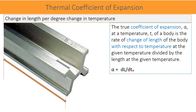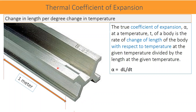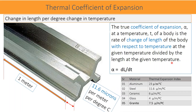For example, a one-meter steel bar measured at 21 degrees expands 11.6 micrometers in length. Aluminum expands 23 microns per meter per degree centigrade; steel expands 11.6 microns per meter per degree centigrade; ceramic 6 microns per meter per degree centigrade; glass 4 microns per meter per degree centigrade; and granite from 6.5 to 7.5 microns per degree per meter.